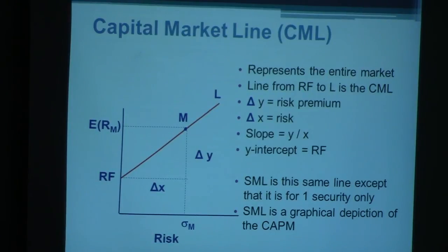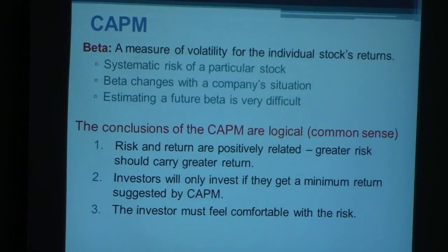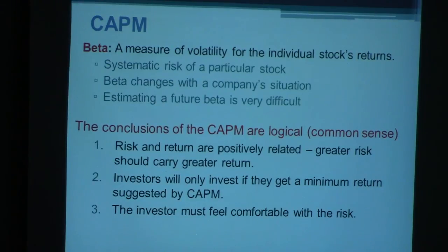Having understood something about CAPM, what are its conclusions? CAPM provides very common-sense conclusions. Number one: risk and return are positively related — the greater the risk, the greater the potential return. Number two: investors will only invest if they get a minimum return suggested by CAPM — if a company's CAPM is 7% and you wanted a minimum of 7%, you may consider investing in it. Number three: the investor must feel comfortable with the risk, since the higher the risk, the higher the potential return, with risk calculated using beta.